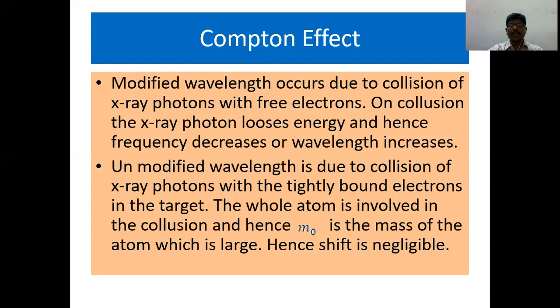Unmodified wavelength is due to collision of x-ray photons with tightly bound electrons in the target. The target is graphite. The whole atom is involved in collision and hence m0 is the mass of the atom which is large. Hence, the shift is negligible.